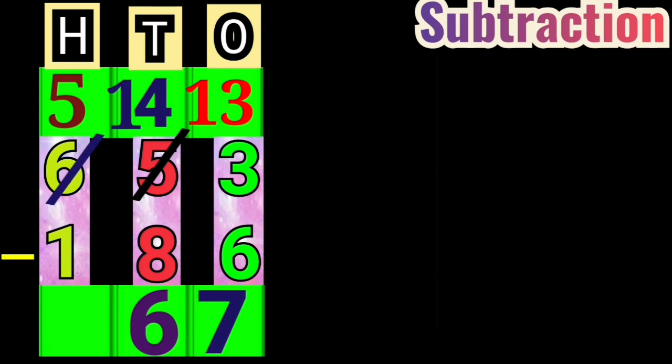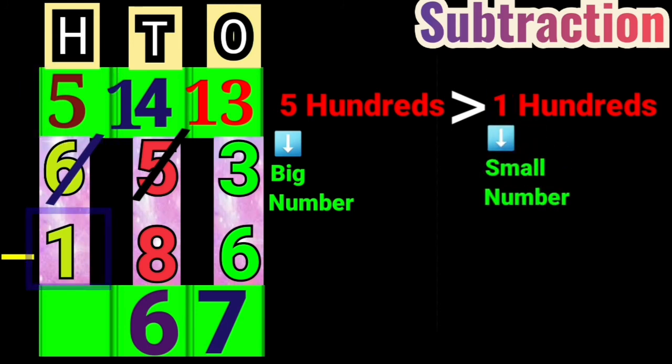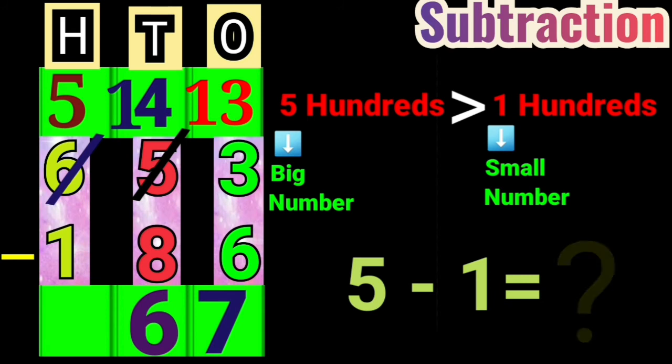Now, subtract the numbers in the 100th column. Here, 5 hundreds are greater than 100. 5 is a big number and 1 is a small number. Now, 5 minus 1 is how much?